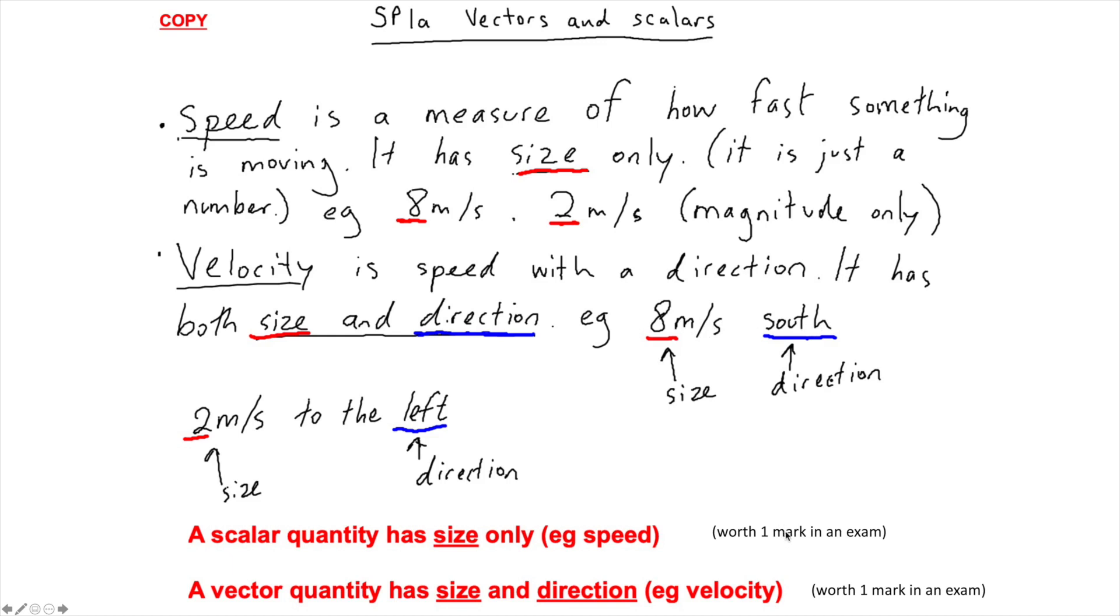You get one mark in an exam for knowing what a scalar quantity is, and one mark in an exam for knowing what a vector quantity is.